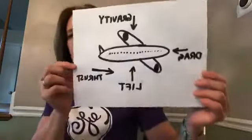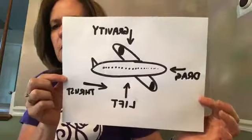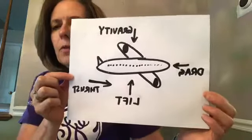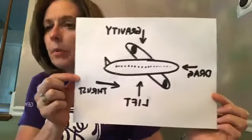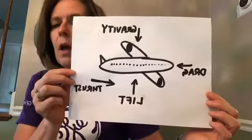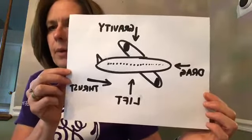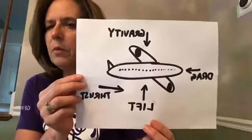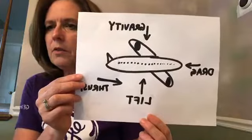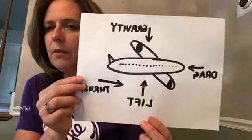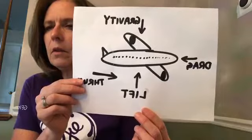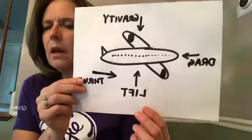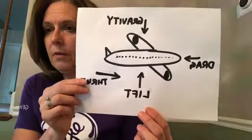Let's go ahead and get started with how airplanes fly. Here's a picture I've drawn that talks about the four forces of flight — the four forces that operate on an airplane. The ones that go up and down: gravity goes down. Most people are pretty familiar with gravity — it's what makes things fall when you let go of them and they fall to the ground.